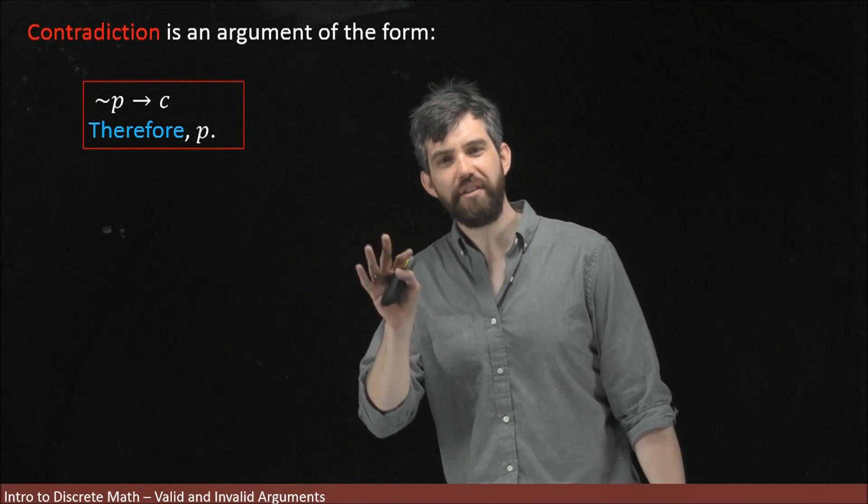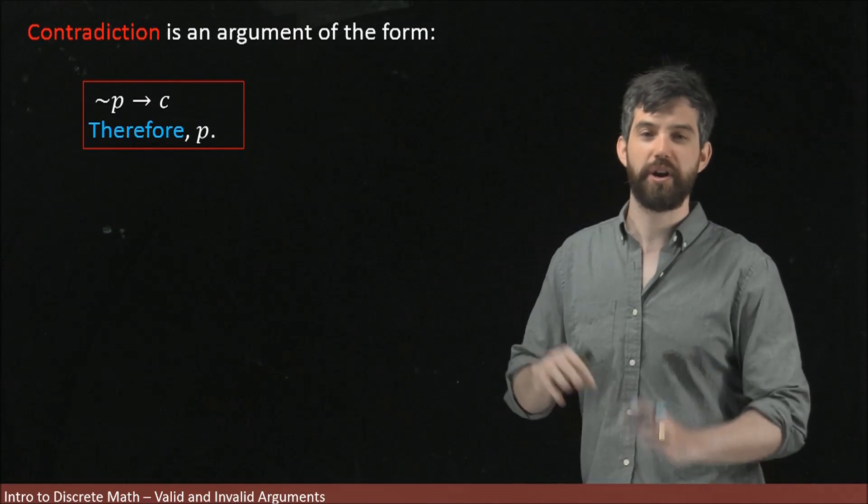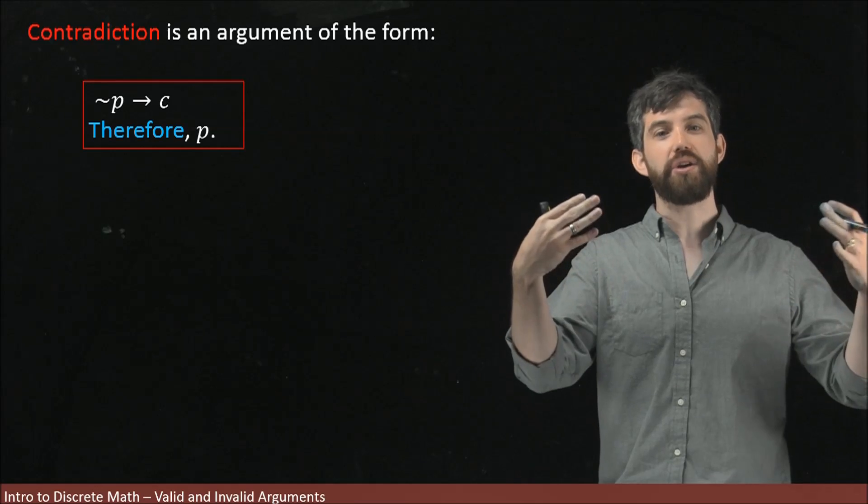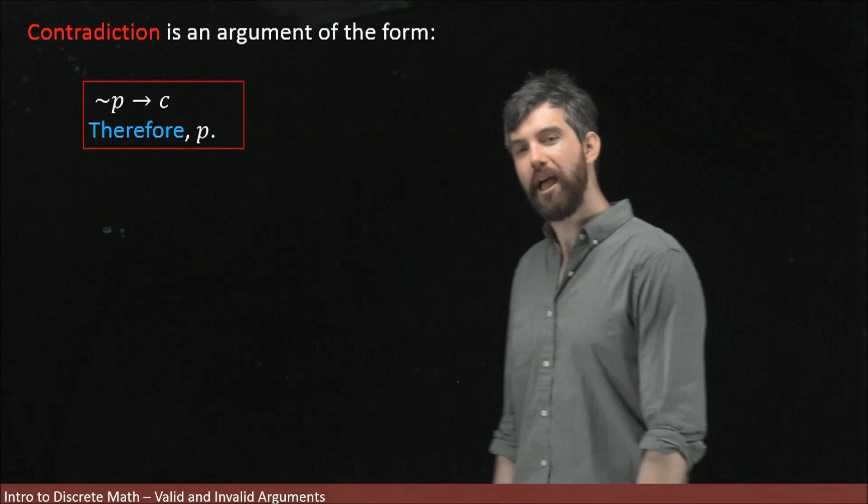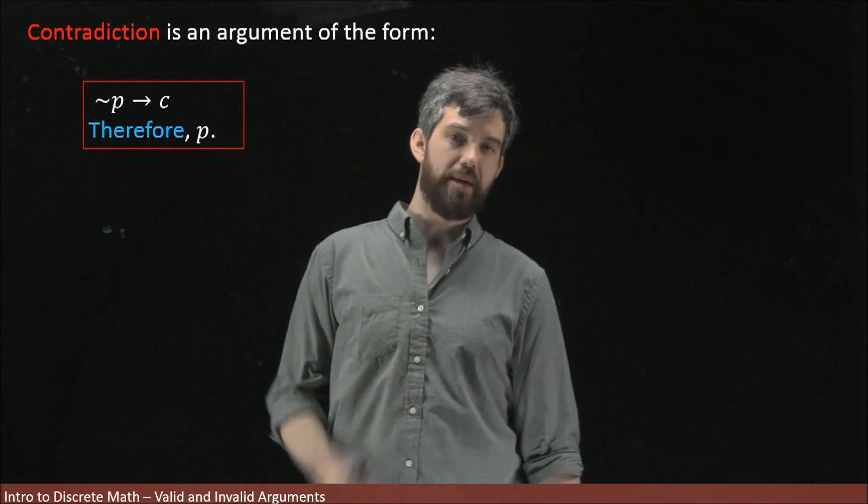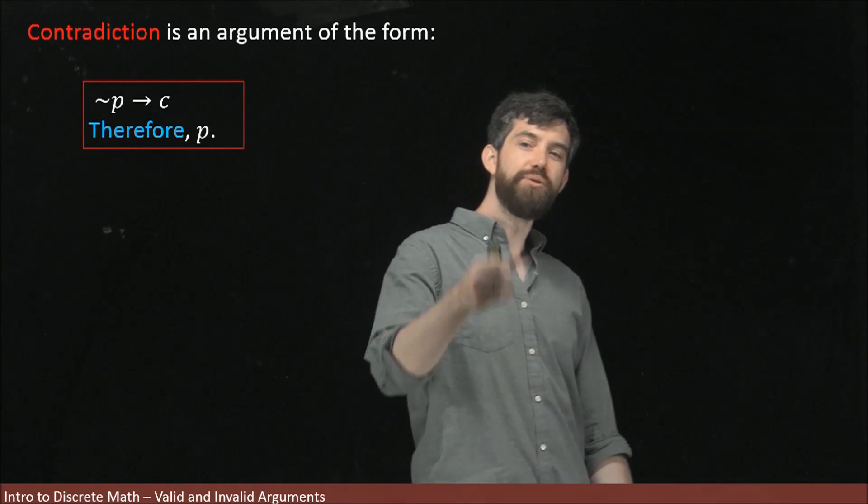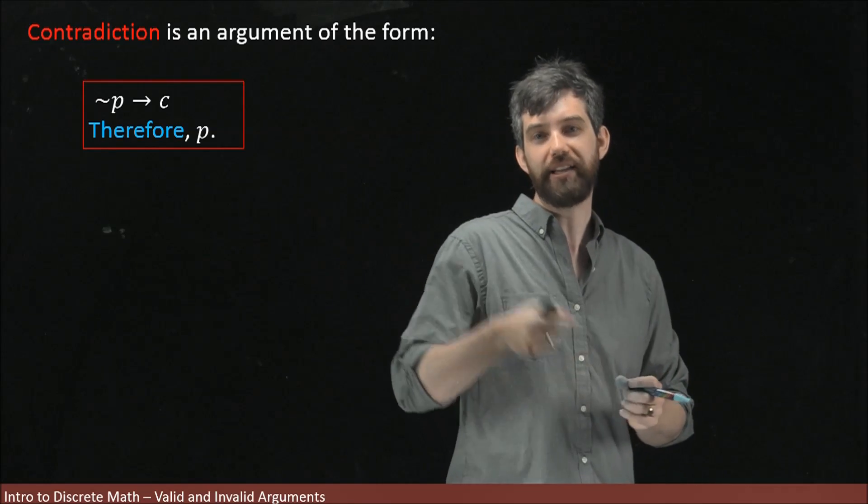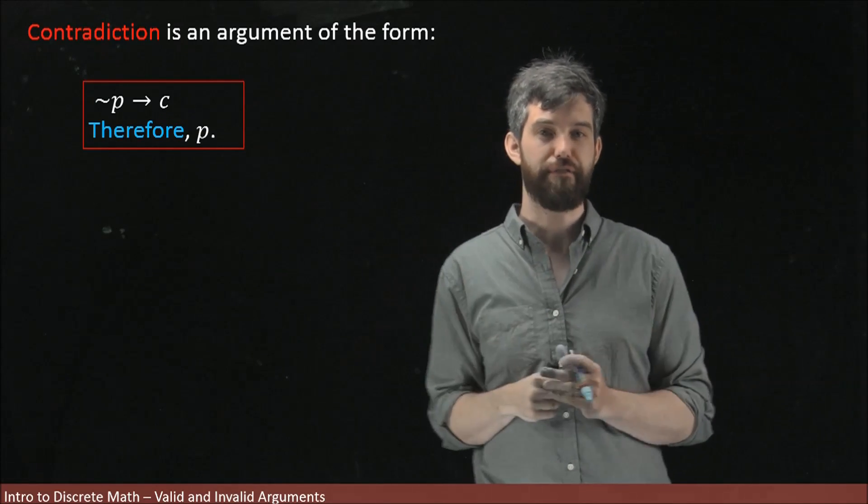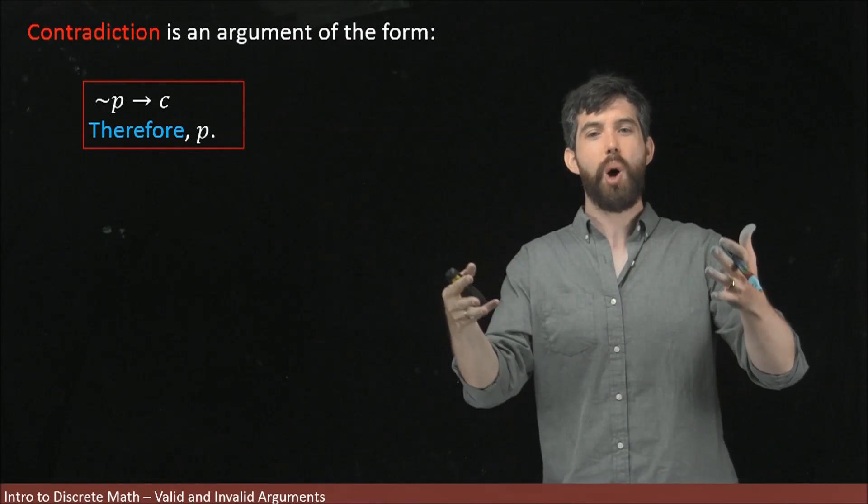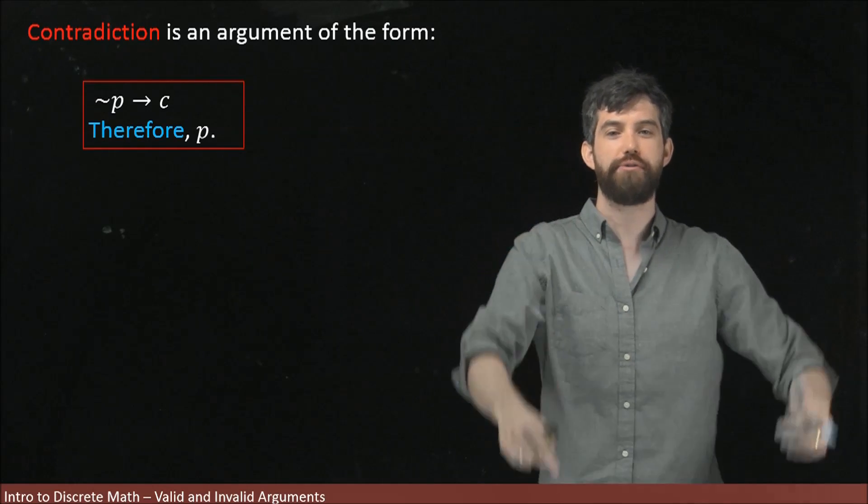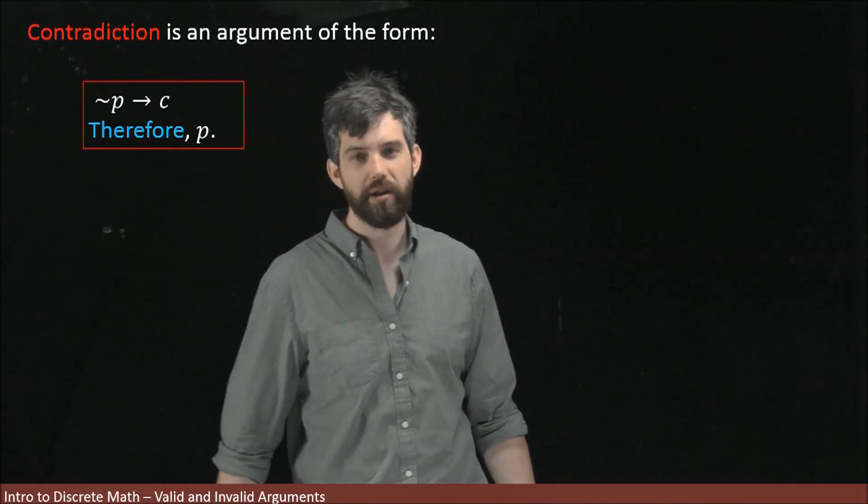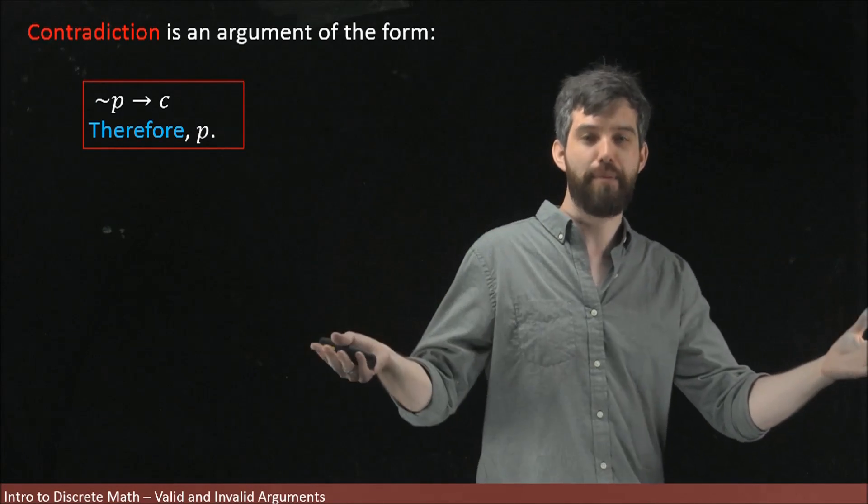A final one, a very important one in mathematics, one that we're going to be using a whole bunch, is arguing by contradiction. And the idea is this: I'm trying to prove a statement P. What I do is I assume, I take as my conditional 'if not P,' I assume that my statement is actually false, and I go along and I derive some sort of contradiction. For example, a contradiction might be something like zero equals one, or I am a mammal and I am a reptile.